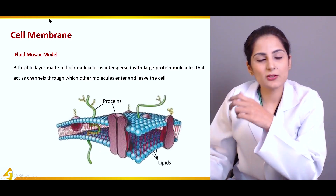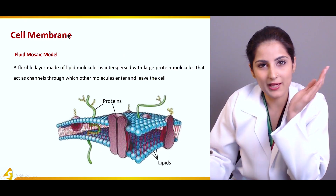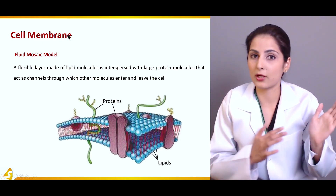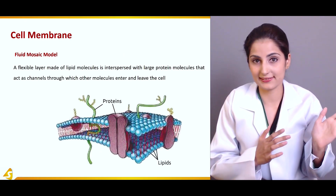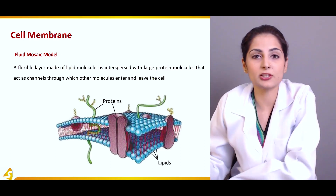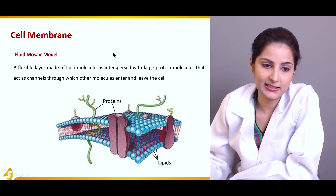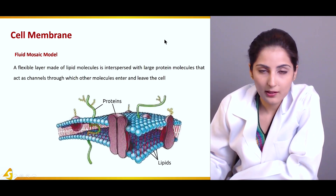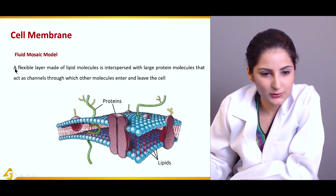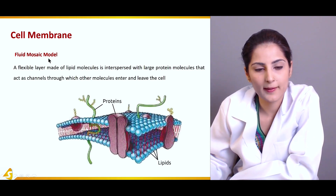It's like this room has a door and everything inside this room cannot go outside that easily — it has to go through that door. This is a function performed by the cell membrane. It is a fluid mosaic model, and now we are going to discuss what is meant by a fluid mosaic model.